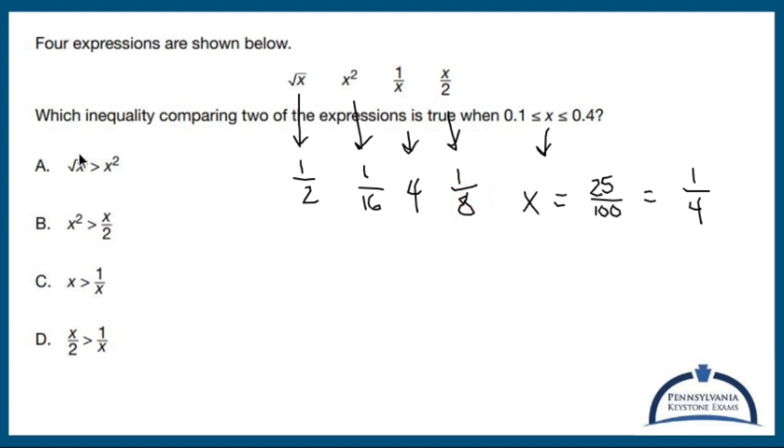So which of these is true? The square root is going to be bigger than x squared. Yes, a half is bigger than one-sixteenth. The squared here is going to be bigger than x over two. No. One-sixteenth is smaller than one-eighth, so not B.